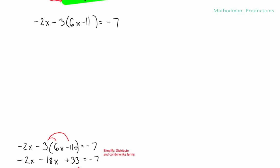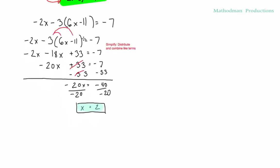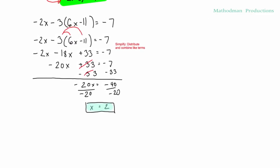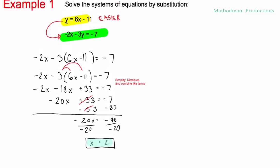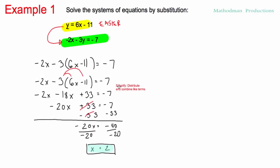Doing that makes it possible to solve for x because that's the only variable you have to deal with. Just distribute and combine like terms first, then solve for x using inverse operations. You get x equals 2. So we're halfway done — we have the value for x.